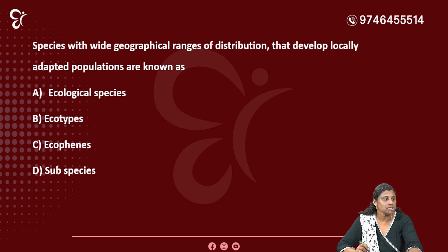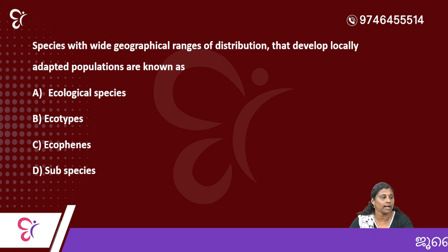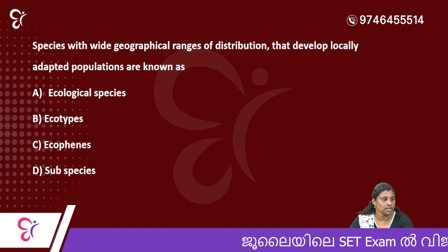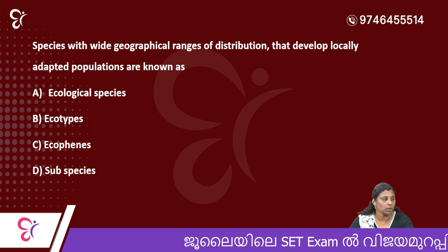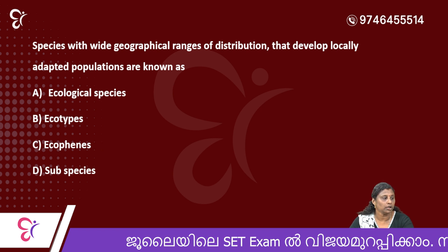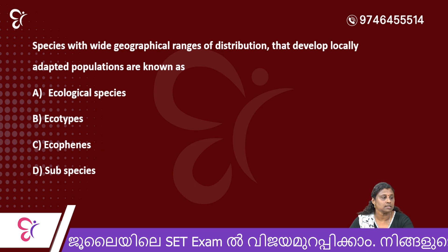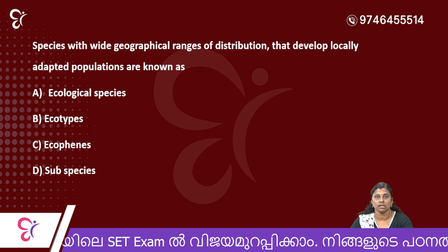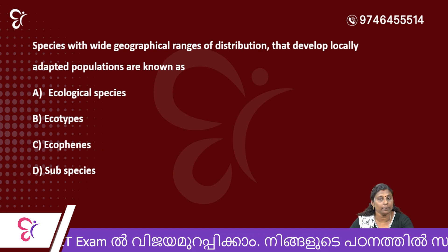Species with wide geographical ranges of distribution that develop locally adapted populations are known as — Option A: Ecological species, Option B: Ecotypes, Option C: Ecophenes, Option D: Subspecies. The correct answer is Ecotypes.